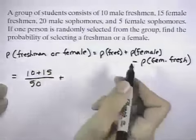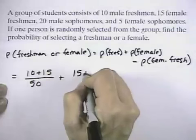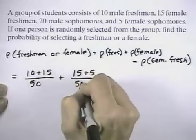Then we want to add to that the number of females, where there's 15 freshman females and 5 sophomore females, again out of 50 total students.